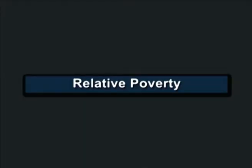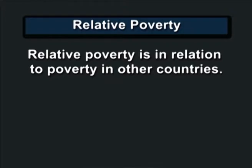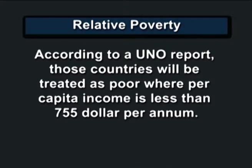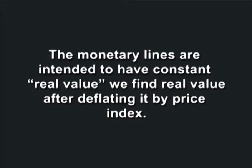Relative poverty is in relation to poverty in other countries. According to a UN report, those countries will be treated as poor where per capita income is less than 755 dollars per annum. Absolute lines aim to measure the cost of certain basic needs, often interpreted as physiological minima for human survival. Nutritional requirements for good health and normal activity levels are widely used to anchor absolute lines, and the monetary lines are intended to have a constant real value, found after deflating by a price index.